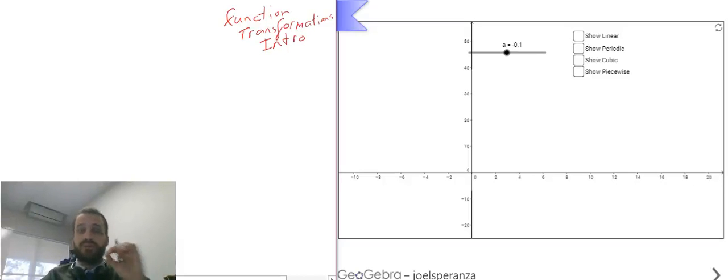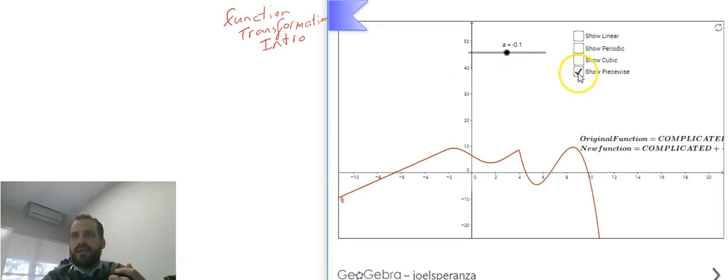Welcome to our five-part series on function transformations. Maybe it'll be a six-part series, who knows. I'm going to show you how function transformations work. Here's a random looking function. I just call it complicated function.